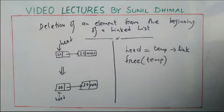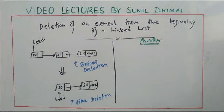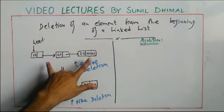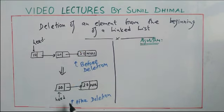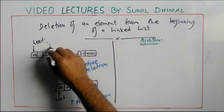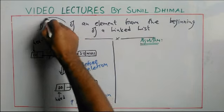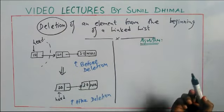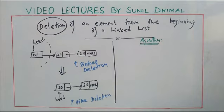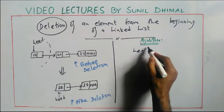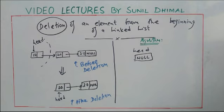Let us look at the algorithm for deleting an element from the beginning of the linked list. Before deletion you have the full list; after deletion the first node is deleted. There is also a corner case: if the list is empty and you perform the delete operation, it should say that deletion is not possible. If head equals null, the list is empty, so we display that message; otherwise we perform the deletion by advancing head to the next node.